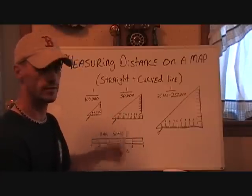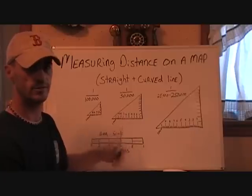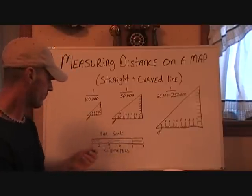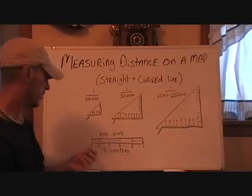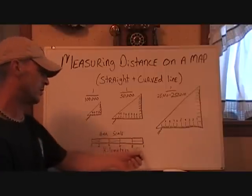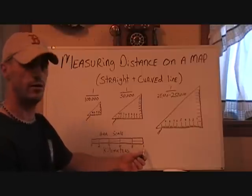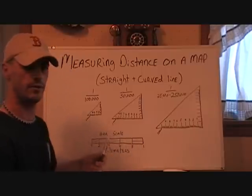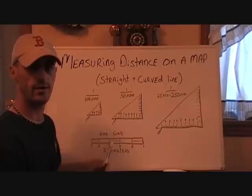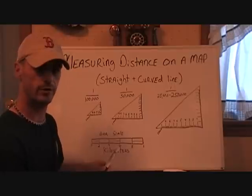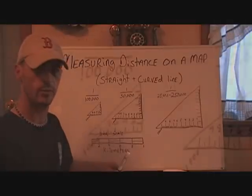Usually the bar scale is a lot bigger on the map, which makes it easier to measure long distances. None of this stuff is rocket science — it's very easy and pretty self-explanatory. But it goes from zero to one, representing one kilometer. On the left-hand side of the zero, they break it down even further, just in case you don't end up with an even number as you're measuring it out. I'm going to zoom in on this and we'll talk about these a little bit more.